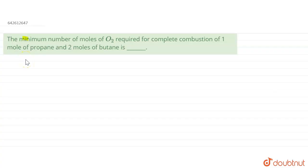The minimum number of moles of O2 required for complete combustion of one mole of propane and two moles of butane. So first we need to write the combustion reaction for propane as well as butane.